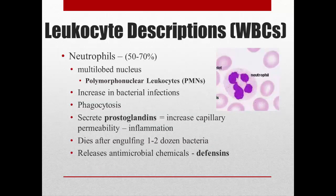Neutrophils are the most abundant type of white blood cell. They have a multi-lobed nucleus, so sometimes they're referred to as polymorphonuclear leukocytes. These neutrophils increase in bacterial infections because their job is to phagocytize and get rid of bacteria, but they can only engulf about one to two dozen bacteria before they die — a limited capacity. They also secrete prostaglandins, which increase capillary permeability and lead to inflammation, and antimicrobial chemicals like defensins, which are similar to lysozyme.